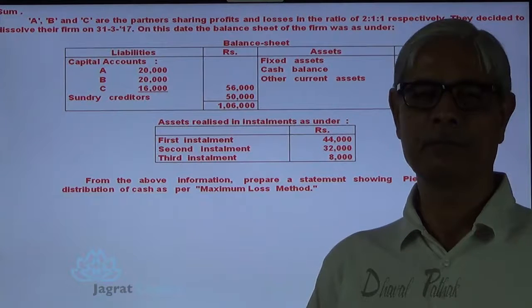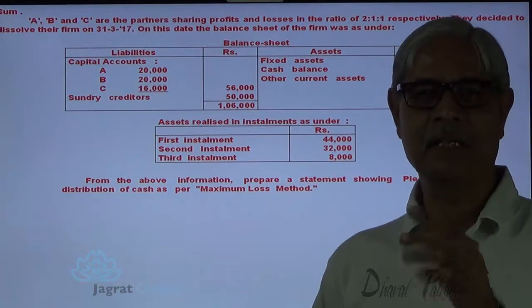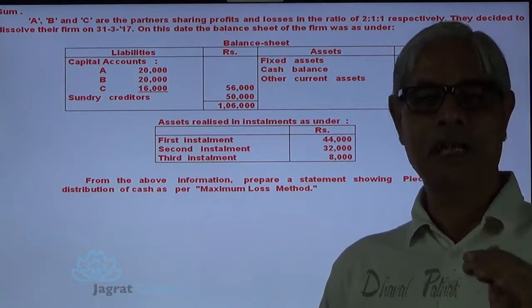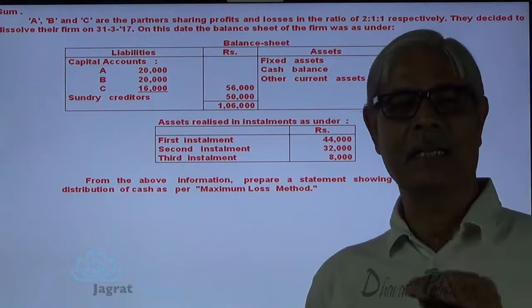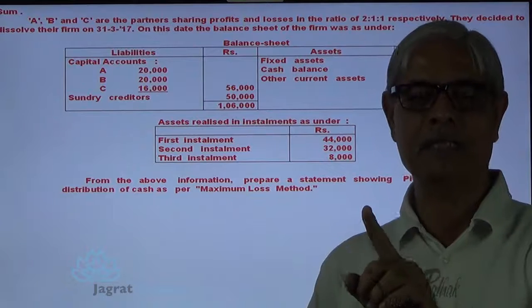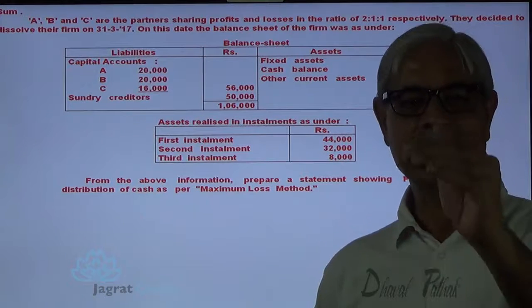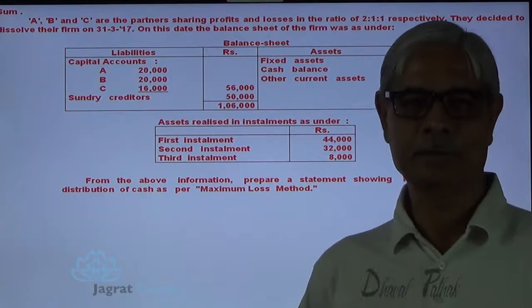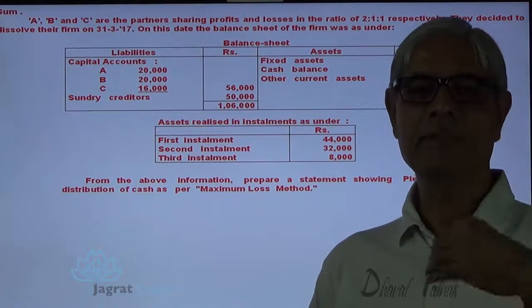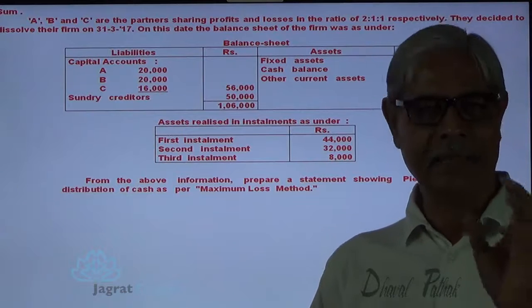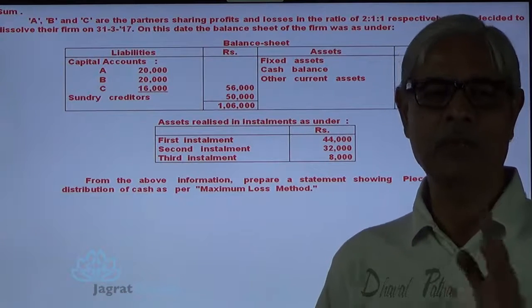In case of dissolution, what we do for accounting? All assets are realized. From the realized value, all liabilities are paid. Profit or loss on realization of assets and settlement of liabilities is distributed amongst partners in the ratio of their profit sharing. So their capital balances increase because of realization profit, and decrease because of realization loss. After giving effect of realization profit or loss, partner's capital is redeemed. The funds available are exactly equal to the claims of partners after recording realization profit or loss. That is the normal philosophy.